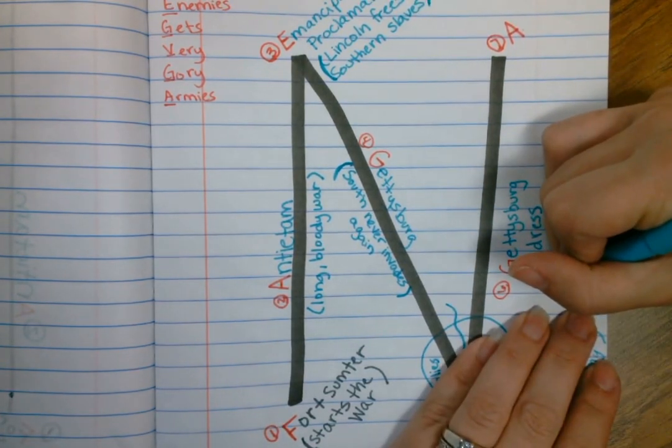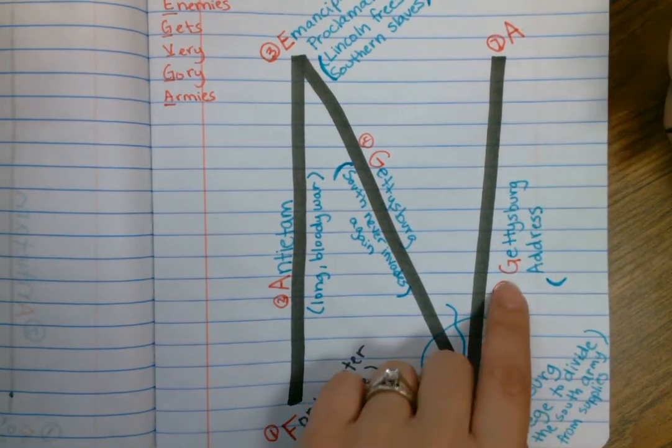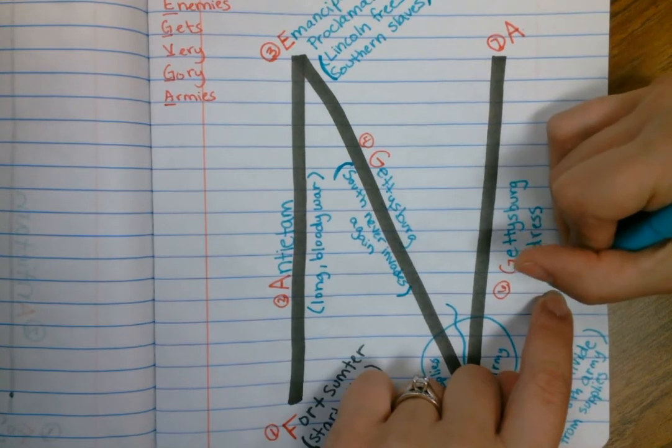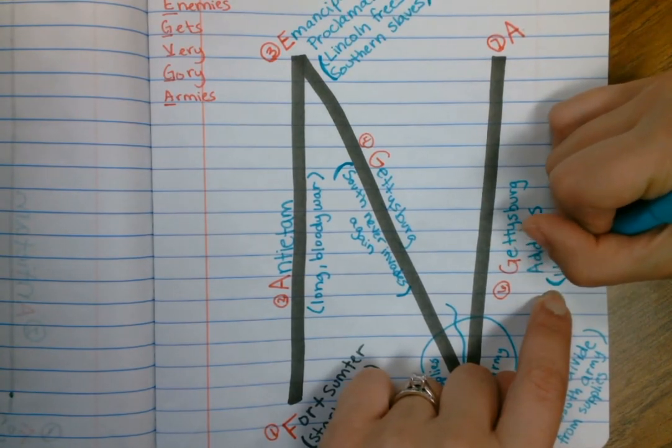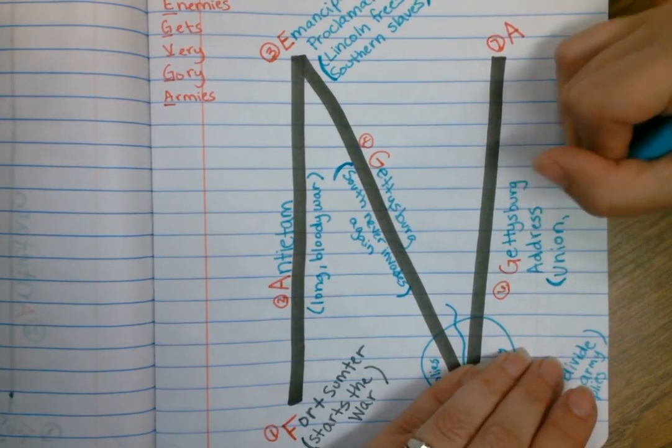He gives a very short speech, but it is a speech that holds into the hearts of Americans in which he says they have not fought in vain. We cannot forget what they are fighting for. And he reminds us that we are a government of the people, by the people, for the people. And so the Gettysburg Address really stresses this idea of union. It really stresses the idea of our people.